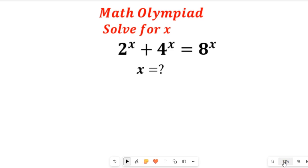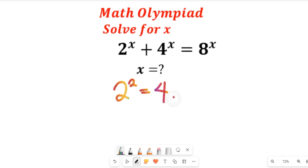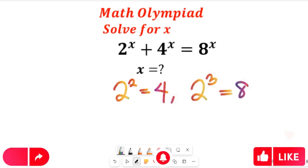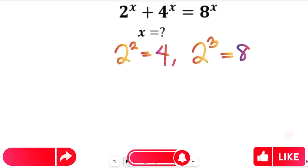To solve this question, I want us to remember this key point: from this question, 2 to the power of 2 is equal to 4, and 2 to the power of 3 is equal to 8. So that means we can simply substitute those values — 2 for 4 and 8, respectively.